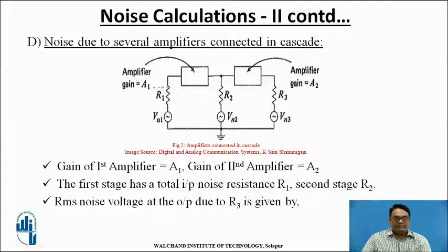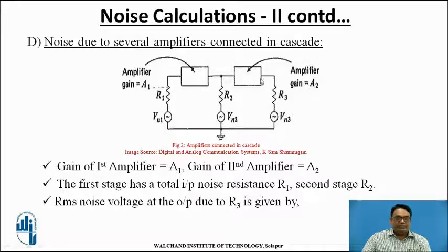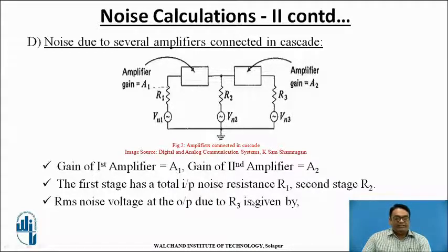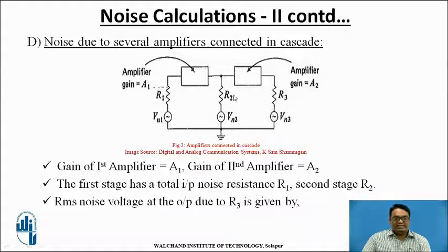The fourth method calculates noise due to several amplifiers connected in cascade. As you can see, there are two amplifiers A1 and A2, where A1 denotes the gain of the first amplifier and A2 denotes the gain of the second amplifier. R1, R2, and R3 are resistances connected in parallel. The first stage has a total input noise resistance R1 and the second stage has R2.